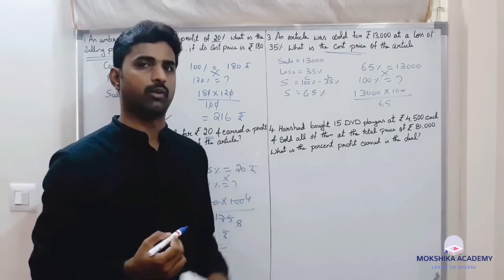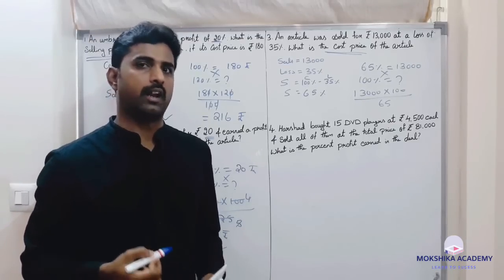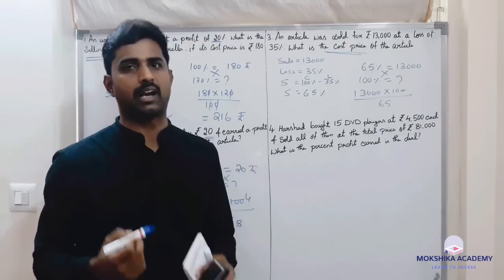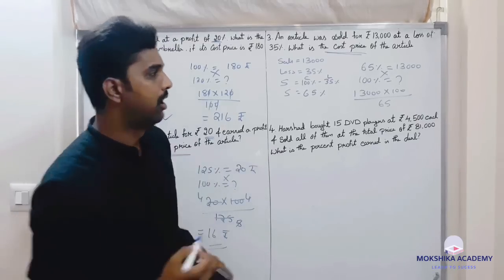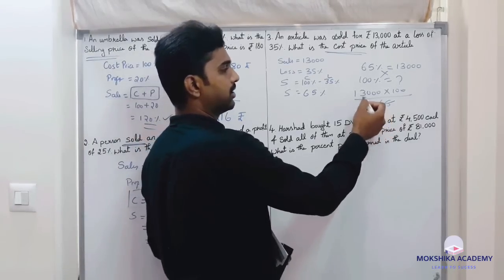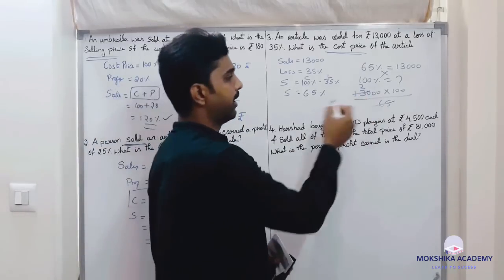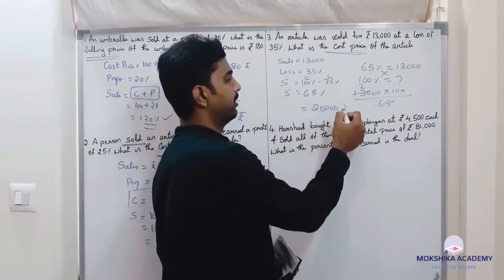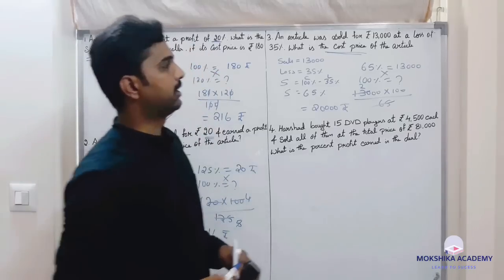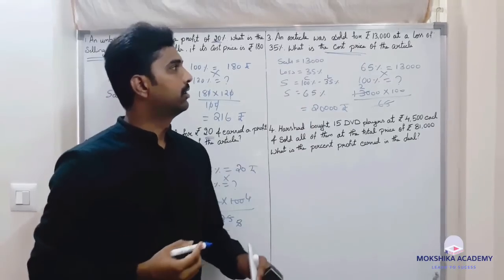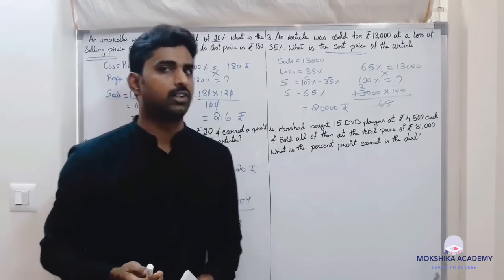You know mathematically, it will be time consuming. Let me show you a quicker way: 65 ones are 65, 65 twos are 130. So 200 into 100 is 20,000. So 20,000 is the cost price and sales price is 13,000.